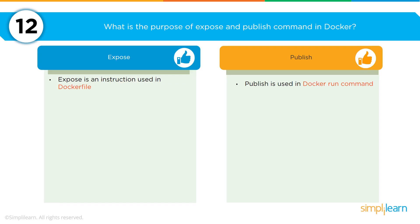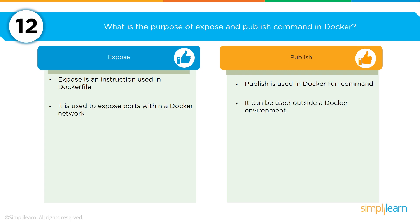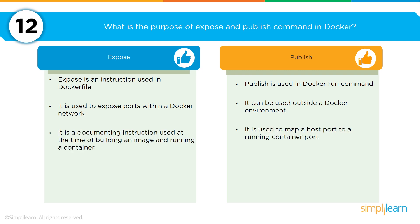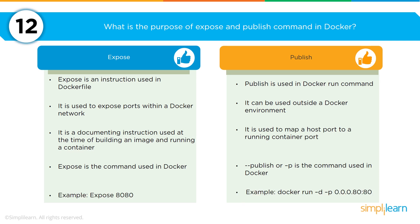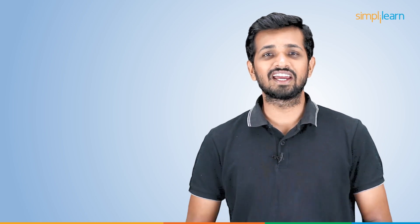What is the purpose of the EXPOSE and PUBLISH commands in Docker? EXPOSE is an instruction used in a Dockerfile whereas PUBLISH is used in the docker run command. EXPOSE is used to expose ports within a Docker network, whereas PUBLISH can be used outside of a Docker environment. EXPOSE is a documenting instruction used at the time of building an image and running a container, whereas PUBLISH maps a host port to a running container port. The command for EXPOSE is `EXPOSE 8080`; for PUBLISH, you use the `-p` flag, for example: `docker run -d -p 0.0.0.0:80:80`.